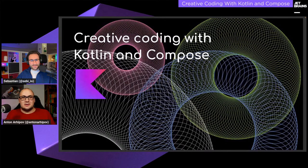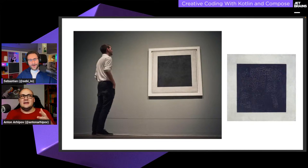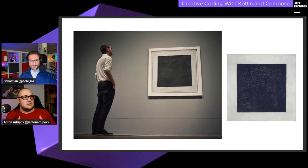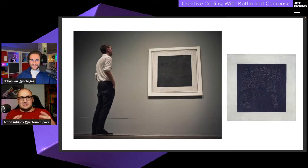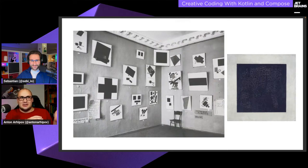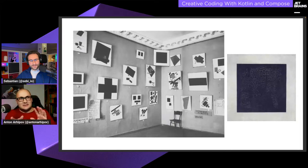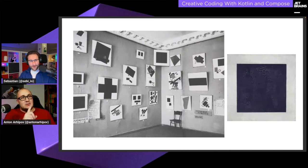Actually, it's Kazimir Malevich's Black Square — probably the most famous picture of them all. But did you know it's just an element? It's a drawing, but it has been used in many other drawings as well. Those who've heard of it usually only know this one picture. But if you search online, you'll find that Malevich used this square all around his pictures in various forms, shapes, and compositions — a great example of code reuse.